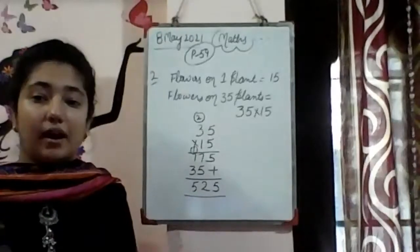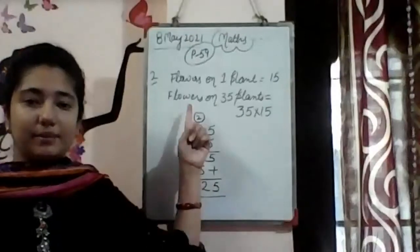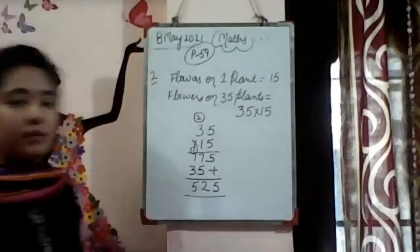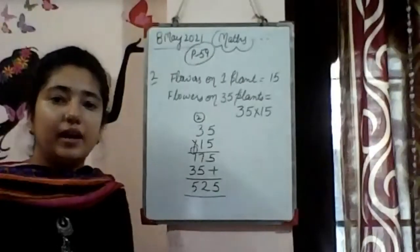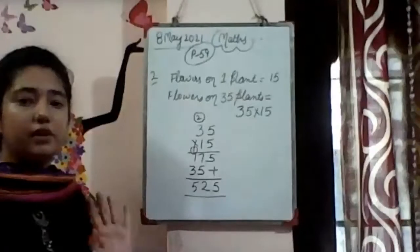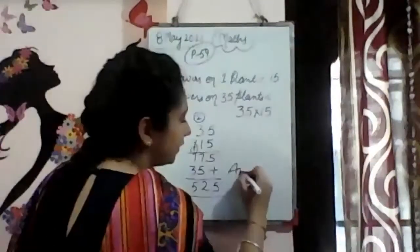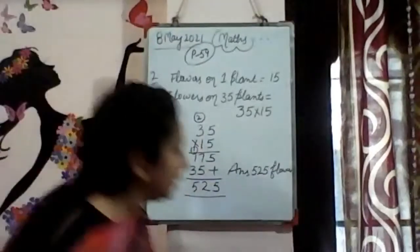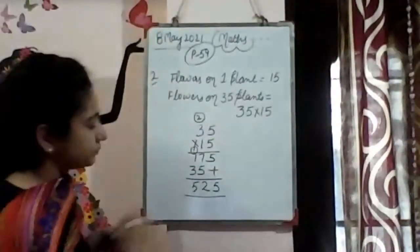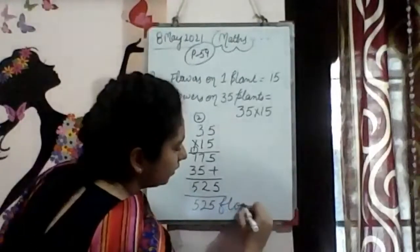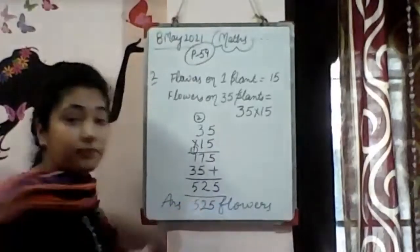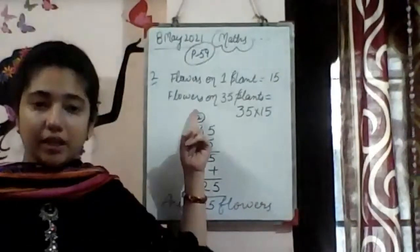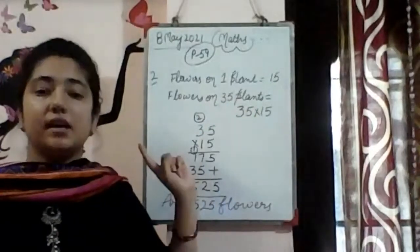Now tell me, the answer is what we have found out? Flowers or plants? We have found out flowers. Answer is 525 flowers, not plants. Because flowers are on 35 plants, and we need to know how many flowers are there.